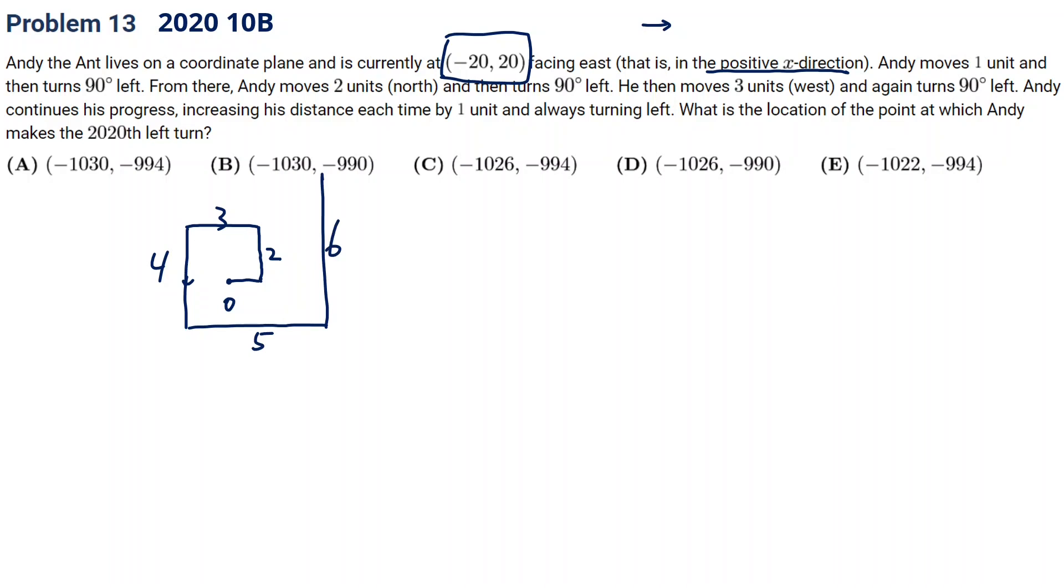So actually, we can consider horizontal and vertical differently. Horizontally, it starts with negative 20. And then first plus 1, then minus 3.